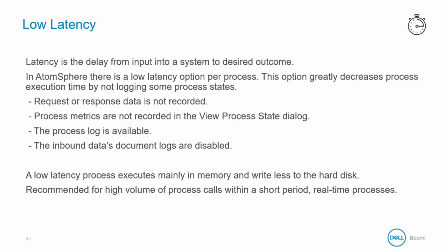Latency is the delay from input or receipt of the inbound request until the execution begins processing. We can enable a low latency option in the build tab at design time, and this option greatly decreases process execution time by not logging some process states. For example, the request or response data is not recorded, and process metrics are not recorded in view process state. The process log is still available, but inbound data's document logs are disabled. When the process executes in low latency, it executes in the heap space allocated and does not use the shared file storage to store data, reducing the performance impact of writing data across the network.